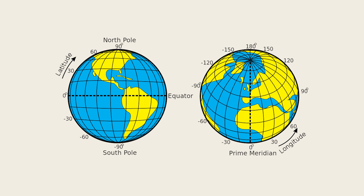Latitude is in reference from the equator towards the poles — our northerly and southerly direction. So 30 degrees north in the northern hemisphere is 30 degrees north towards the north pole.